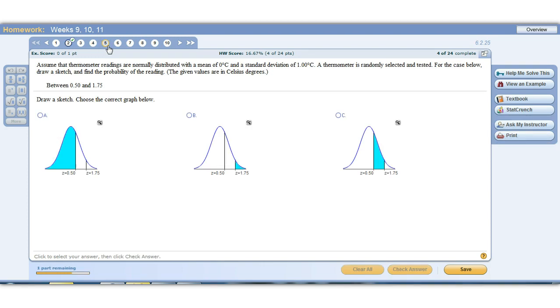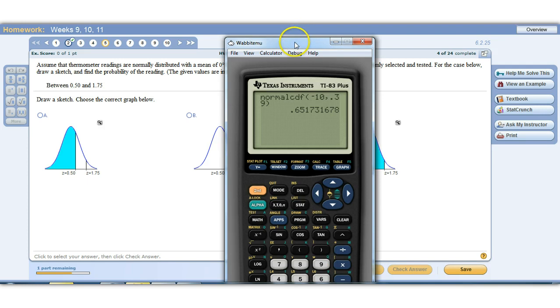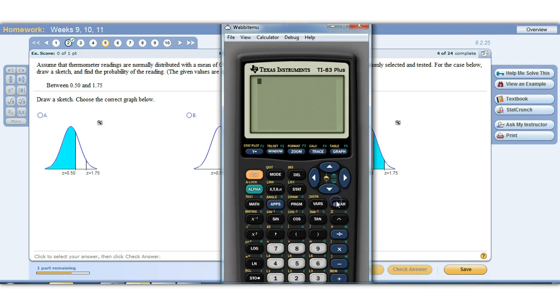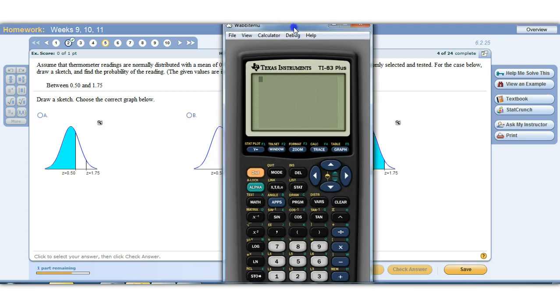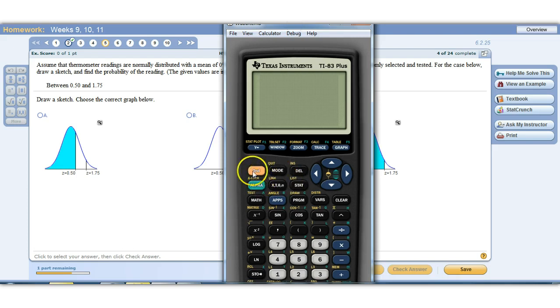Problem number five, a similar problem. It says, assume the thermometer readings are normally distributed with a mean of zero, standard deviation of one. So this is the exact same thing as a standard normal distribution. They're just giving it some type of an application. We want to find the probability that we get between 0.5 and 1.75 in the same distribution. So this is a standard normal distribution, even though it is technically an applied problem. But we're still using the same features.